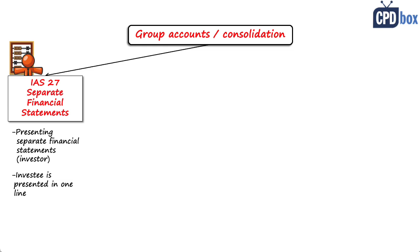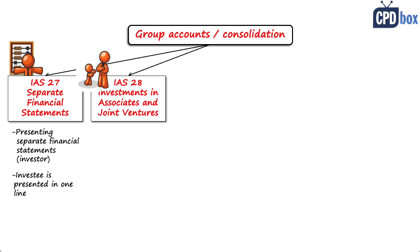The second one is IAS 28, Investments in Associates and Joint Ventures. This standard prescribes how to account for these types of investments and defines and describes the equity method of accounting.